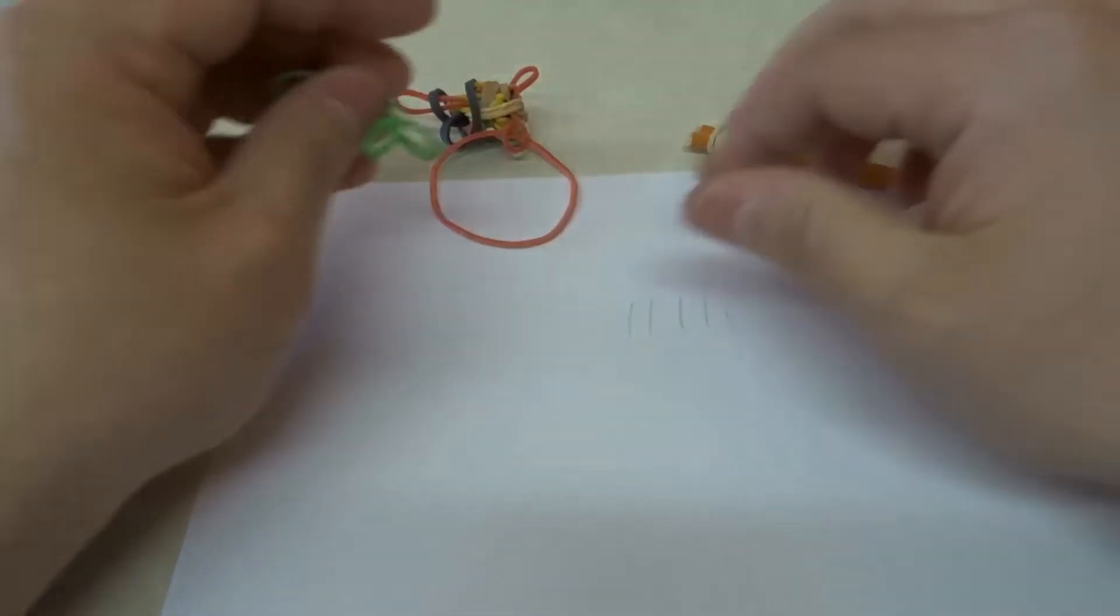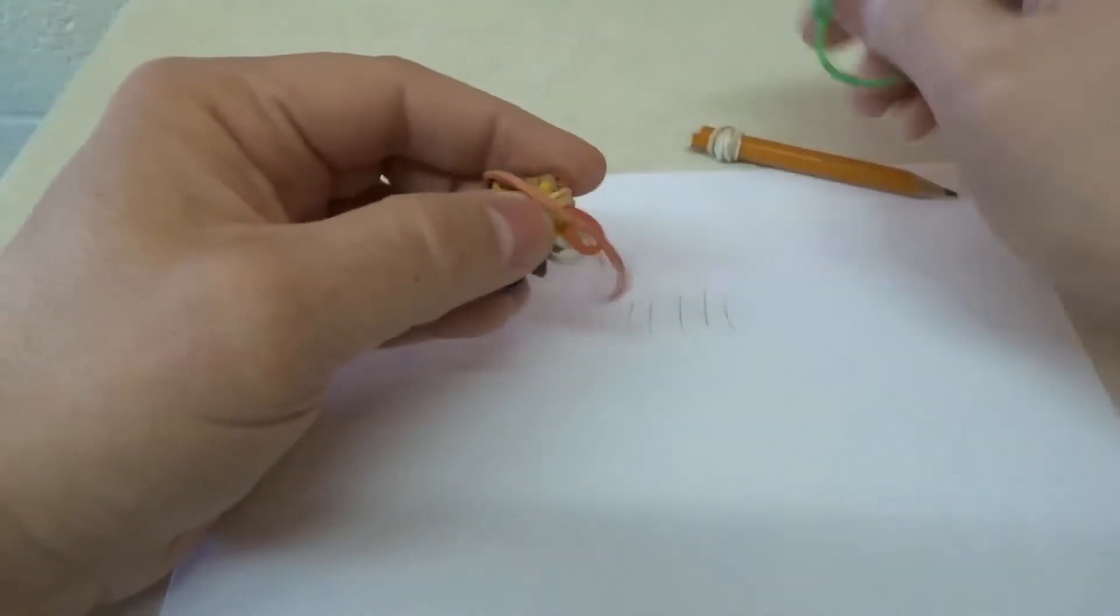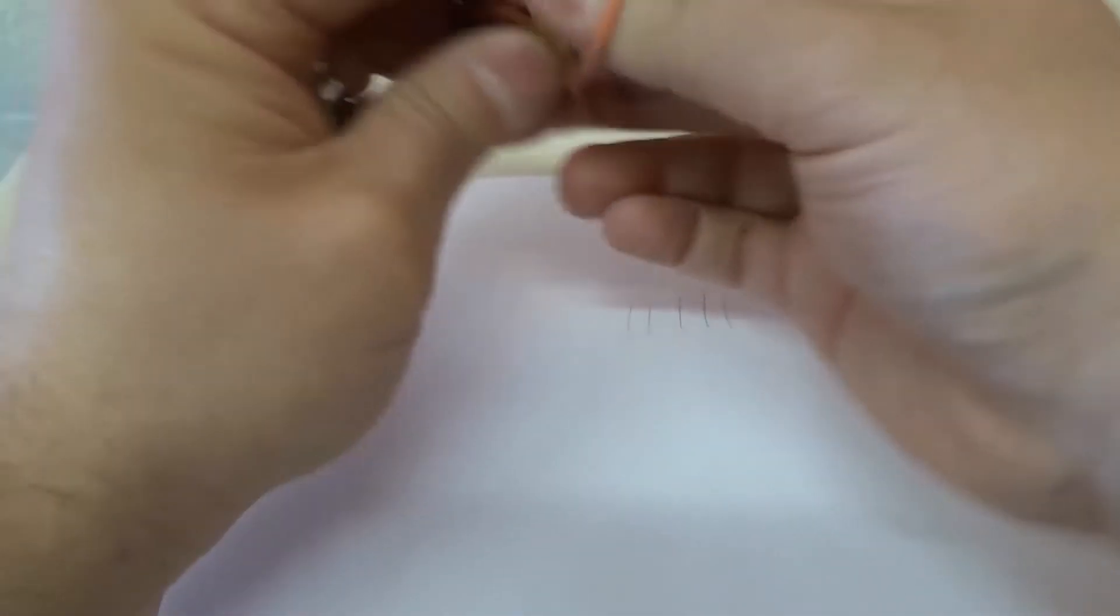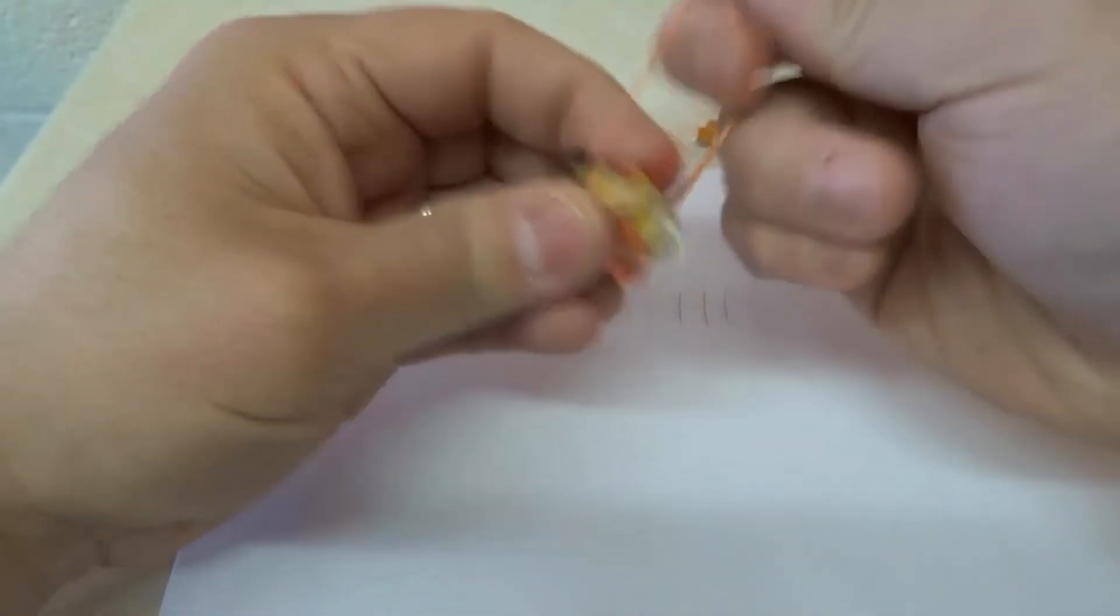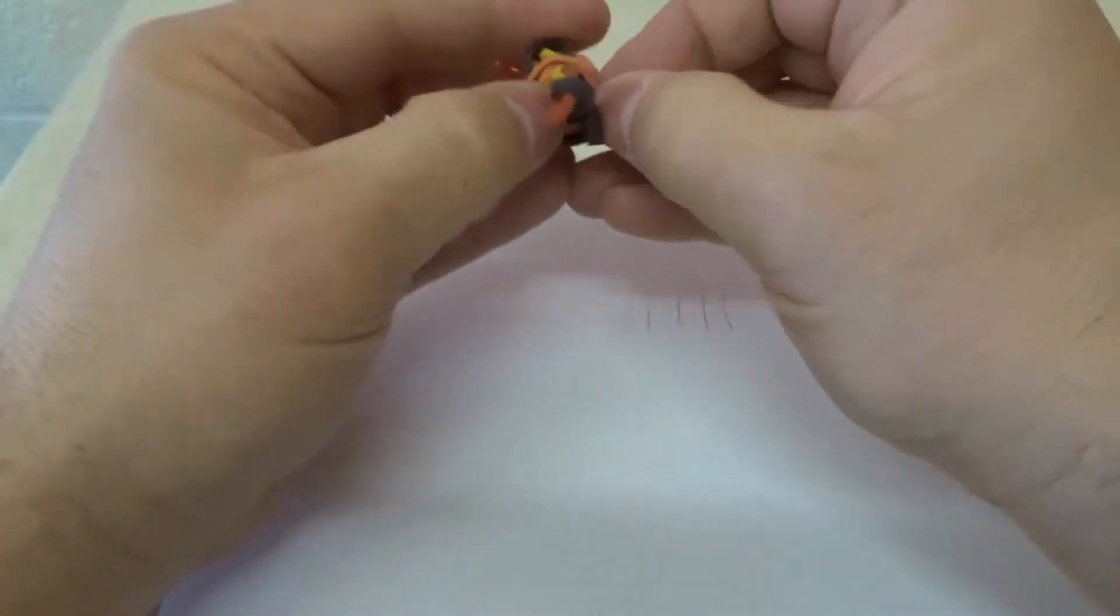So you want to either create a rubber band ball like I started to create over here, which is just a whole bunch of elastic bands that you can sort of just wrap around each other over and over. And so you create sort of like a rubber band ball, you can do that. And then you can always use that, you can play with it or you can use it to erase. So rubber band balls are really good and convenient.